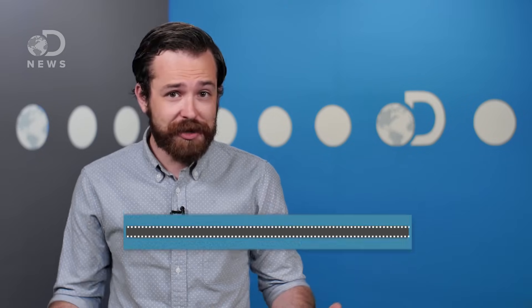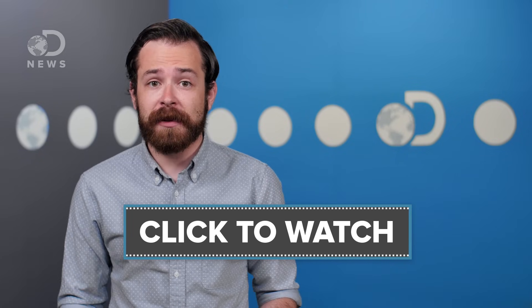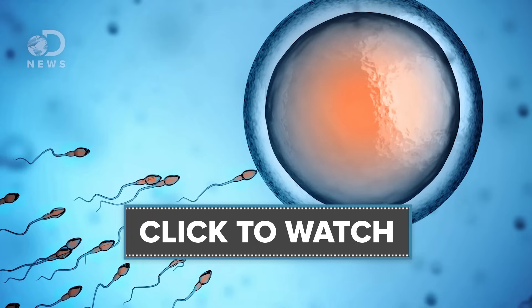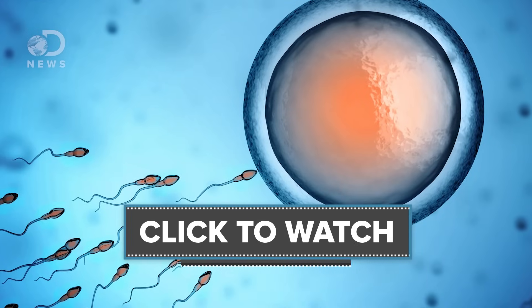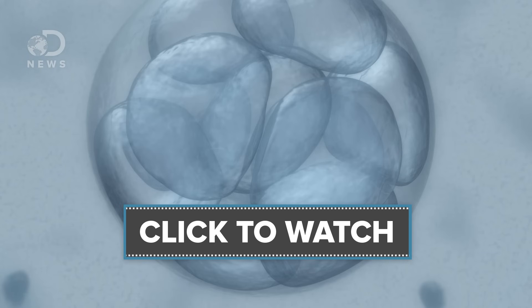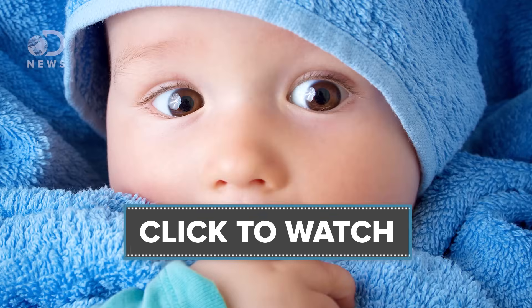Making a baby is pretty straightforward. At a base biological level, it simply comes down to a sperm cell fertilizing an egg cell, also called an oocyte, which undergoes cell division, develops into an embryo, which itself develops into a little baby.